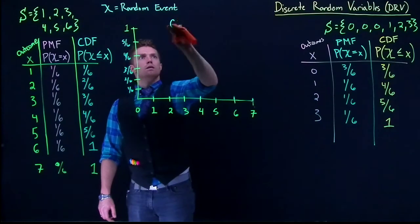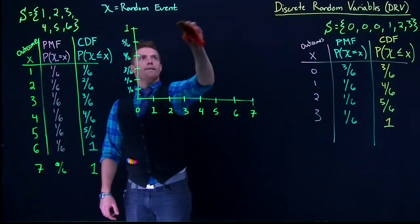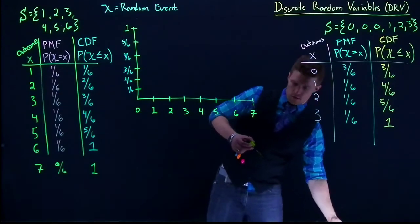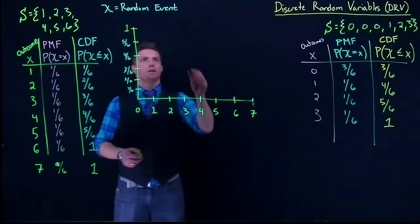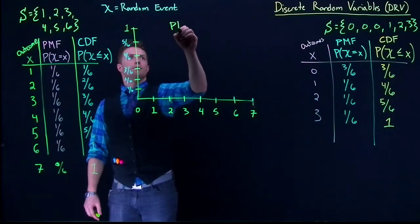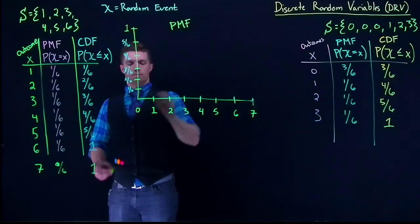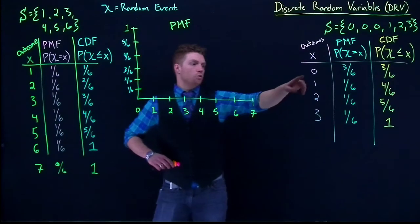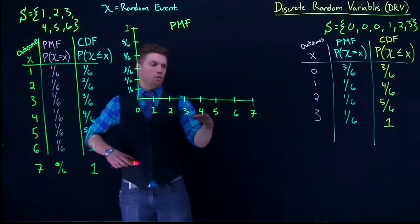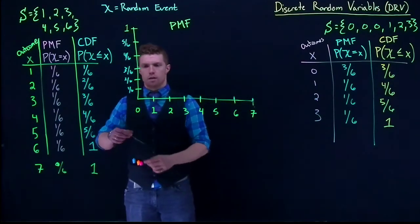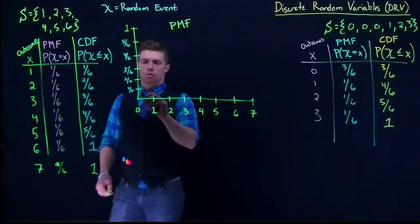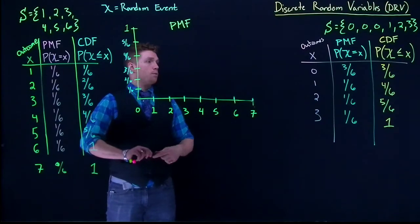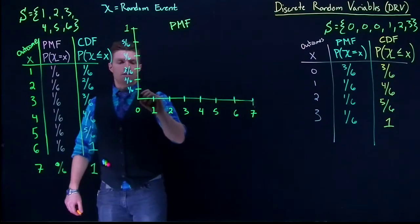Let's start off with our PMF. This one, notice how our outcomes are only going to go from 0 to 3. So we don't even have to worry about 4, 5, 6, 7. And so for 0, let me use a different color. The probability of rolling a 0 is actually 3/6.